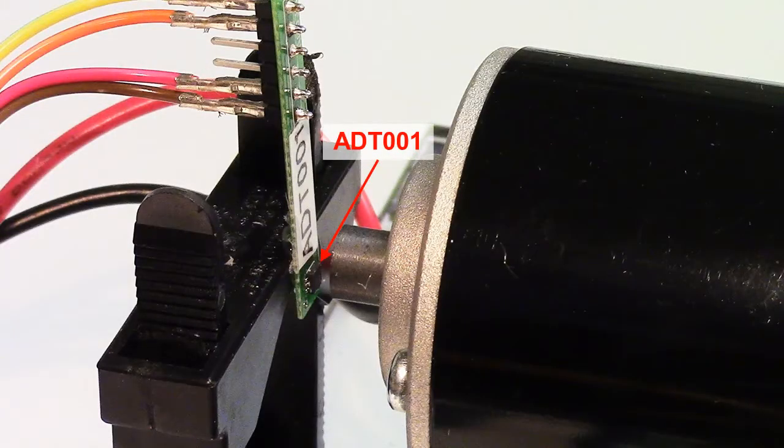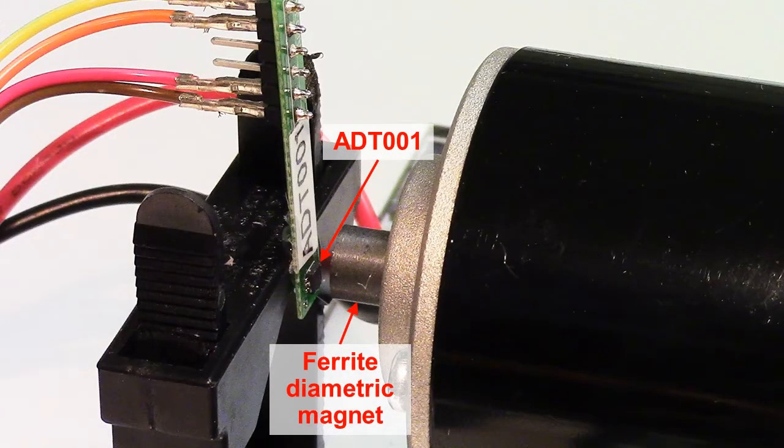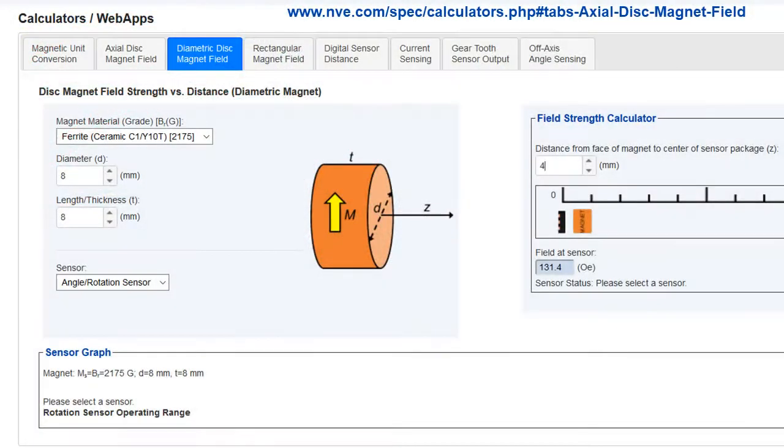We're using an inexpensive diametrically magnetized magnet on the end of the motor shaft. There's an NVE web application to check the sensor position but it has a very wide tolerance because of the sensor's wide magnetic range.